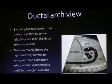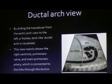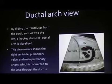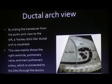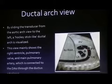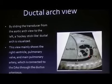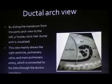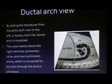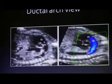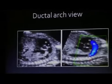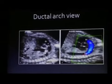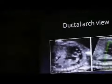This is the ductal arch view. The ductal arch view originates from the right ventricle — pulmonary trunk — and the pulmonary ductus arteriosus. The ductus arteriosus then opens and unites with the aorta. Here, the ductus arteriosus unites with the descending aorta.